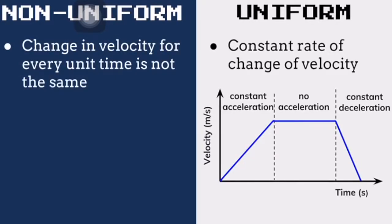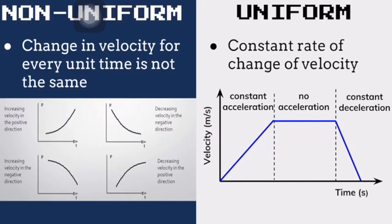Regardless of whether there is acceleration, deceleration, or no acceleration at all, the graph of uniform acceleration is always a straight line. An object experiences non-uniform acceleration when the change in velocity for every unit time is not the same. When an object is increasing increasingly in the positive direction, the graph will be a U-shape. When an object is increasing decreasingly in the positive direction, the shape of the graph will be an N-shape. Both apply to the negative direction too.